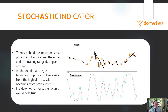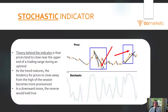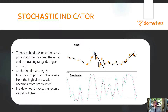The theory behind this indicator is that prices tend to close near the upper end of a trading range in an uptrend. Looking at an uptrend on the chart, prices tend to close higher or near their high. In a downtrend, the opposite holds — prices will be closing closer to their bottom or lows. The stochastic oscillator, shown below price, acts as a smoothing device generating signals.